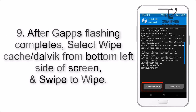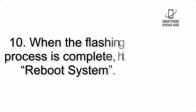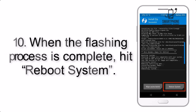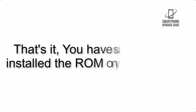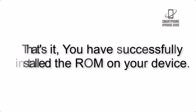Step 9: After GApps flashing completes, select Wipe Cache and Dalvik from the bottom left side of the screen and swipe to wipe. Step 10: When the flashing process is complete, hit Reboot System. That's it — you have successfully installed the ROM on your device.